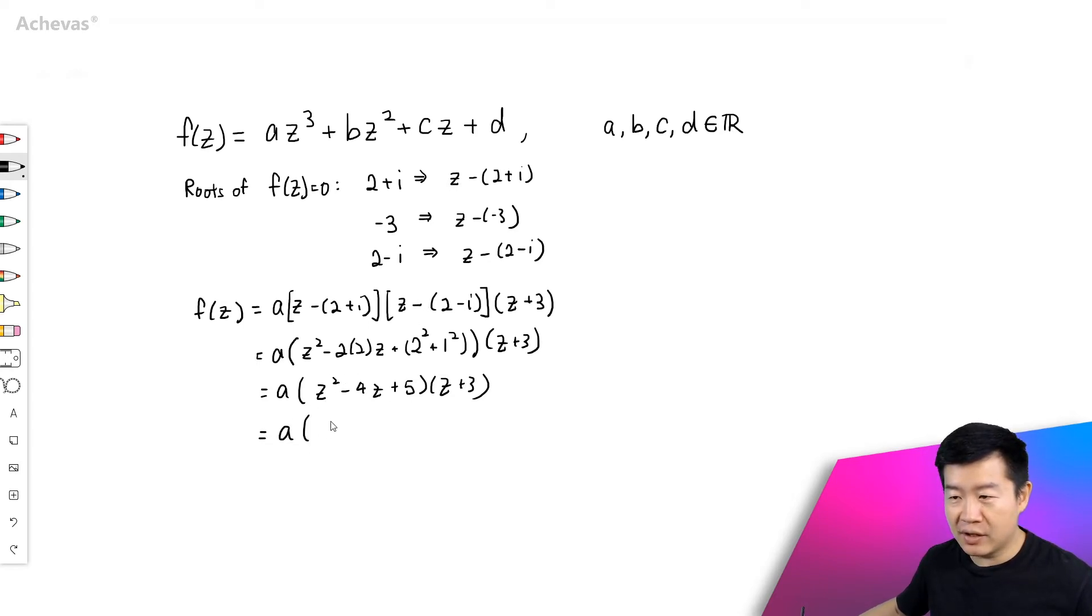So expanding this further, z squared multiplied by z, we have z to the power of 3. This multiplied by z squared, it is going to be plus 3z squared. And this multiply by z squared, minus 4z squared, minus 12z, 5 and z, it is going to be plus 5z. And 5 and 3, it will be plus 15.